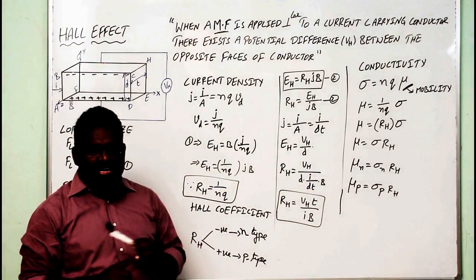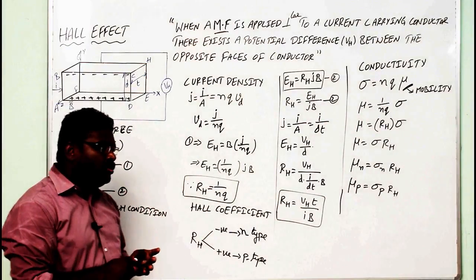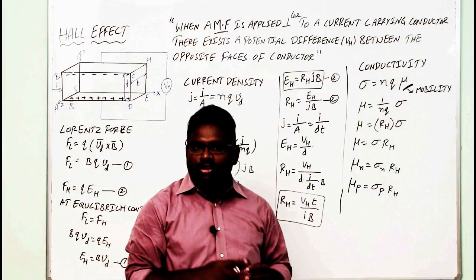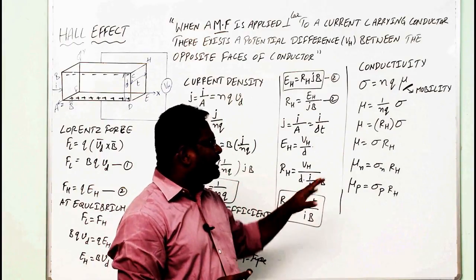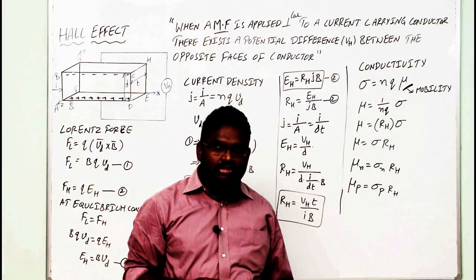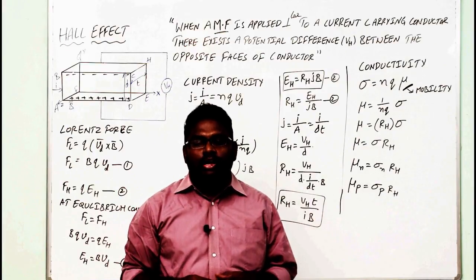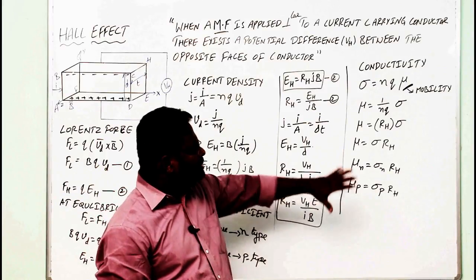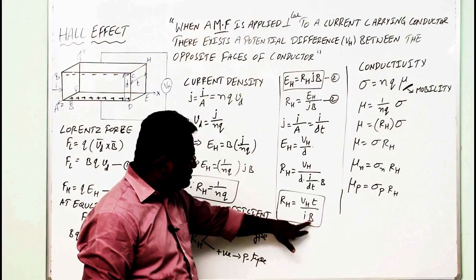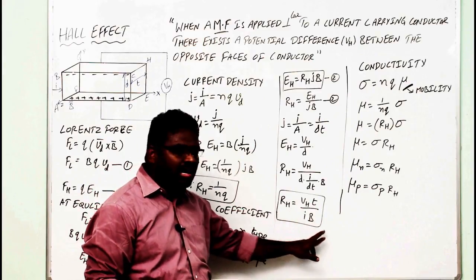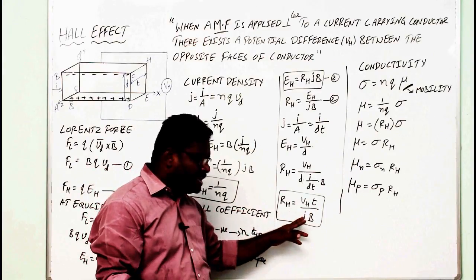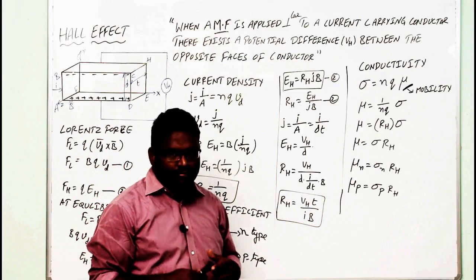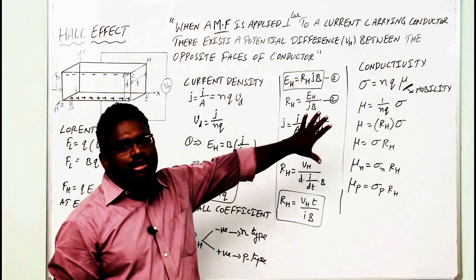The applications of the Hall Effect are: first, to determine whether the material is of n-type or p-type semiconductor; second, to calculate the mobility of the charge carriers; and third, to calculate the applied magnetic field B, using B equals V_H·T divided by (I·R_H). One can also know how much current is being applied to a particular semiconductor. Like this, one can calculate many things using the Hall Effect.